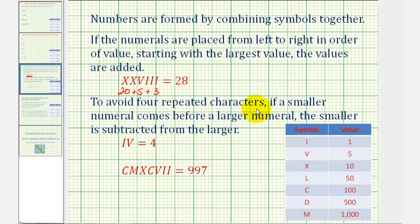However, to avoid repeated characters, if a smaller numeral comes before a larger numeral, the smaller is subtracted from the larger. For example, instead of using four i's for four, we put an i before a v, or a one before a five. This represents five minus one, or four.